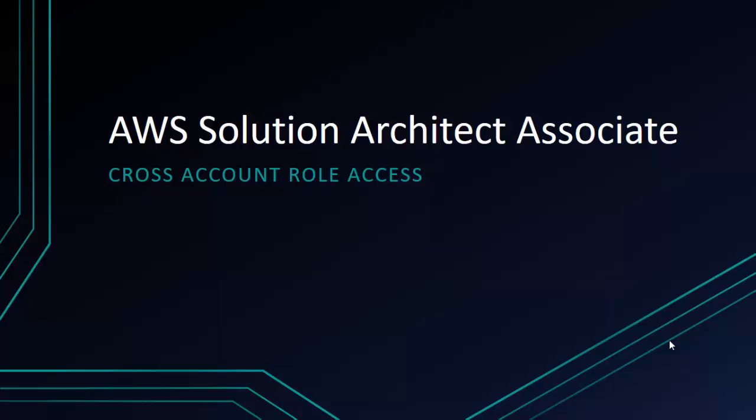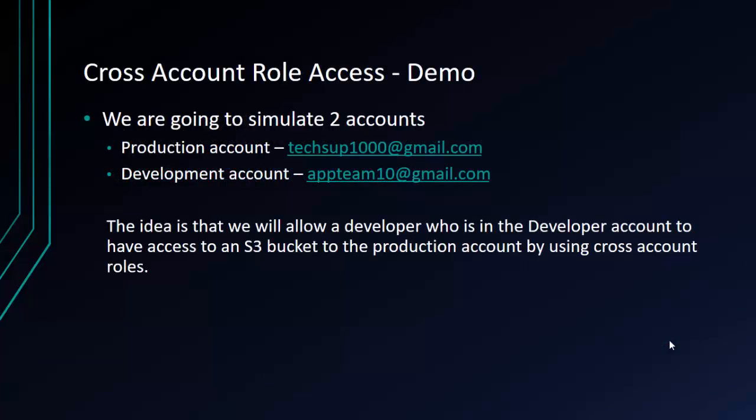Hi and welcome back. In this chapter, we're actually going to see a demo of the cross account role access. So before we go ahead, I want to tell you what we're going to do in this demo. We're going to have two AWS accounts. We're going to use the primary account we've been using this entire course — let's assume this is our production account in an organization. I then have another AWS account created — let's assume this is a development account.